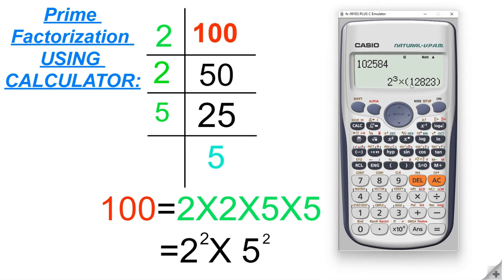This is the result and here we can see that this number 12823 is a prime number.